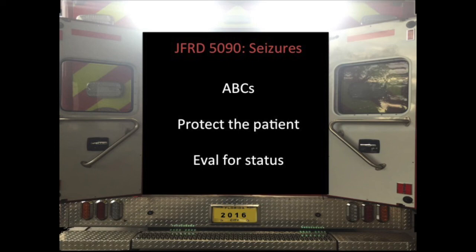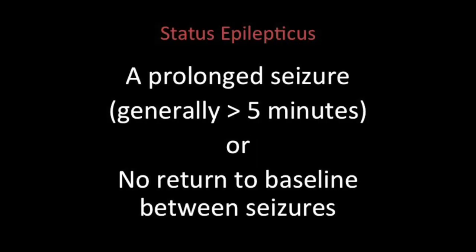Evaluate for status epilepticus — a prolonged generalized seizure. They're having a seizure too long, or having multiple seizures without returning to baseline. The current definition is greater than five minutes. It used to be 30 minutes, but that's crazy to watch someone seize for 30 minutes. Generally greater than five minutes of straight seizing is what we call status epilepticus. This is very dangerous — you're having a constant electrical storm in your brain, you're going to suffer injury, and you're not breathing right during that time, so you'll get hypoxic injury.